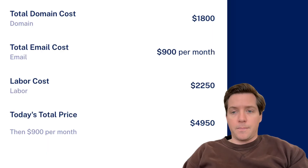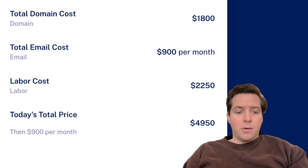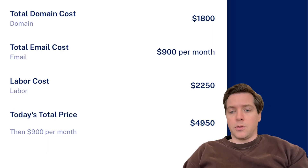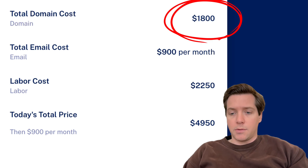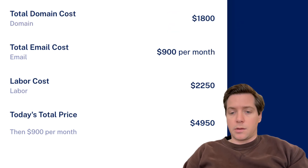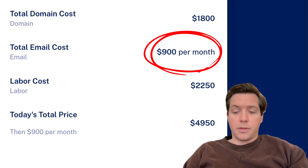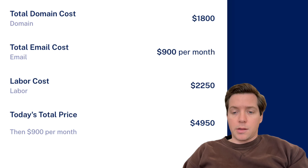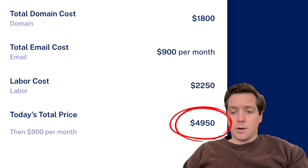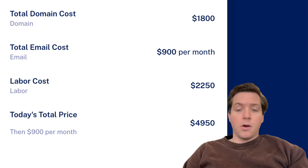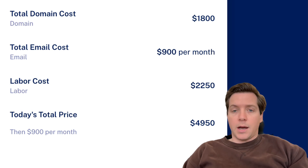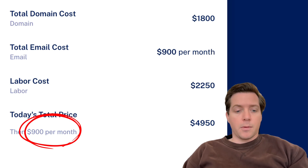Slightly more expensive, but it's worth it. You can see here our total domain cost is going to be $1,800. Our total email cost will be $900 a month in management, and our total labor cost will be $2,250. So today's total price is going to be $4,950 with an ongoing price of $900 per month.